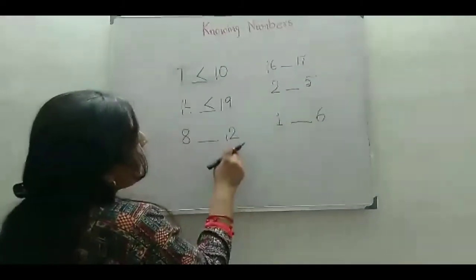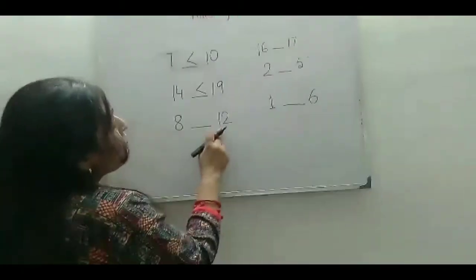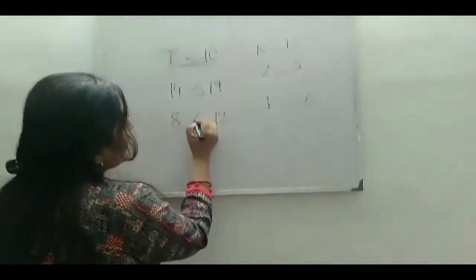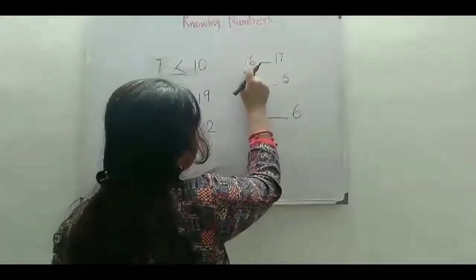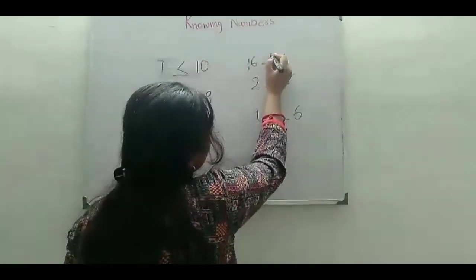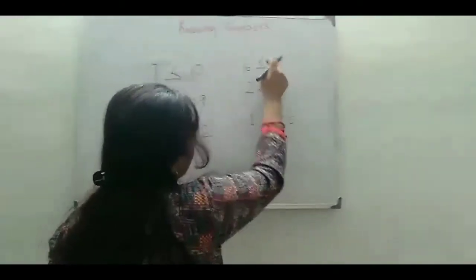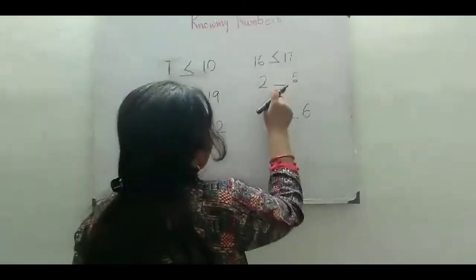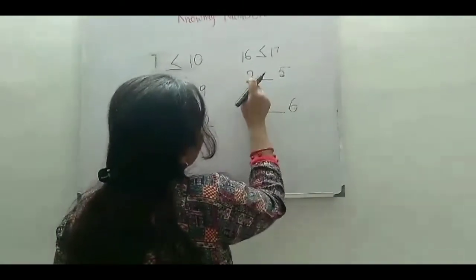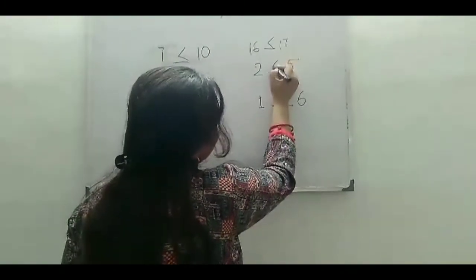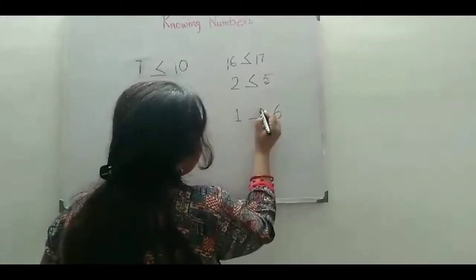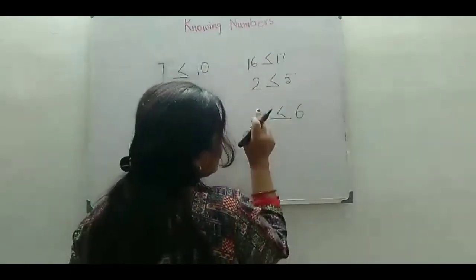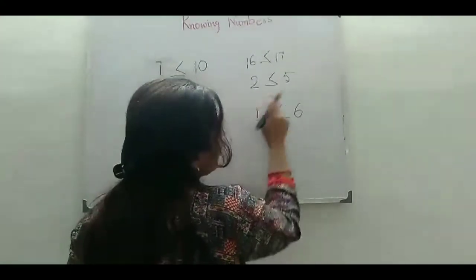Next one is 8 and 12. We know 8 is always less than 12, so the sign should be the less than sign. Next one is 16 and 17. We know 16 is always less than 17, so the sign should be 16 less than 17. This sign shows less than. Once again, 2 and 5 — we know 2 is always less than 5, so the sign should be less than. And 1 and 6 — we know 1 is always less than 6, so the sign should be less than. This sign marks that the left number is always less than the right number.